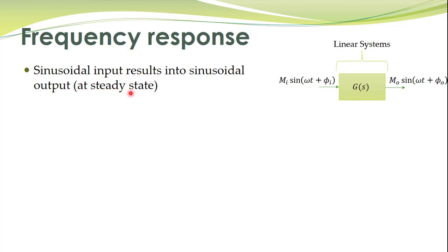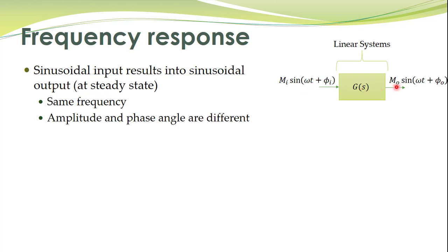This result — sinusoidal input produces sinusoidal output — holds at steady state. During transients you may observe different characteristics, but at steady state the output is sinusoidal. The frequency of the output sinusoid is the same as the frequency of the input sinusoid; however, the amplitude and phase angle of the output sinusoid may differ from those of the input. For sinusoidal signals we write the amplitude and phase angle, since the frequency of the output matches that of the input.